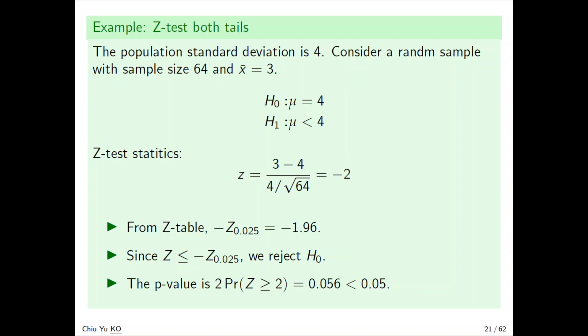Look at the example. The standard deviation is 4, random sample with size 64, and sample mean is 3. H₀: μ = 4, H₁: μ < 4. The test statistic is z equals 3 minus 4 over 4 root 64, which equals negative 2.